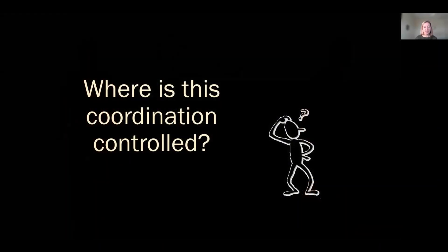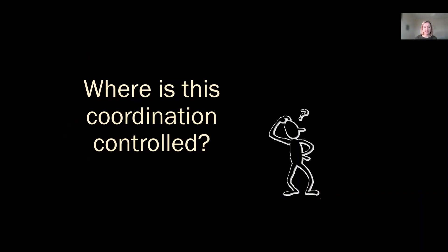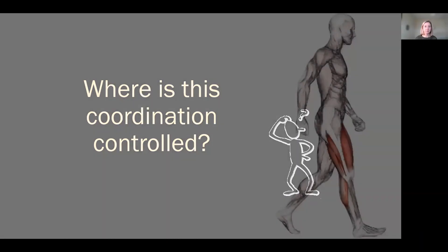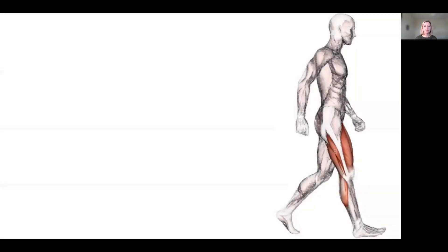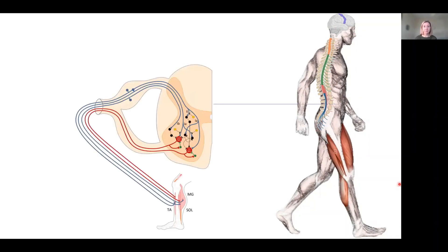But where does that coordination come from? Where is it controlled? This is what I'm really interested in understanding. You might think it's the brain — the brain sends signals down to the muscles — and that's certainly true to some degree. The signals that the brain sends down go down the spinal cord and then out to the muscles to make muscle contraction.